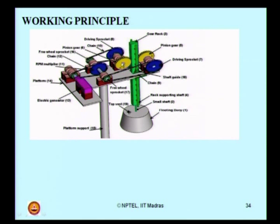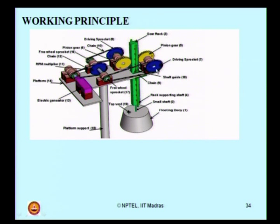Similarly, when the buoy moves up, this rotates anticlockwise, so this is released from the socket. Now this rotates in a specific direction that will activate the rear gear mechanism, which will again make the shaft rotate. So for both up and down movement of the floating buoy, you always have a unidirectional motion of the shaft. I connect an electric generator to the shaft and generate power from ocean wave energy. The ocean waves hit the buoy, the buoy moves up and down, the up-and-down causes rotary motion in this mechanism, and ultimately the shaft is made to rotate at a specific RPM. The mechanical energy is converted to electrical energy by the system.